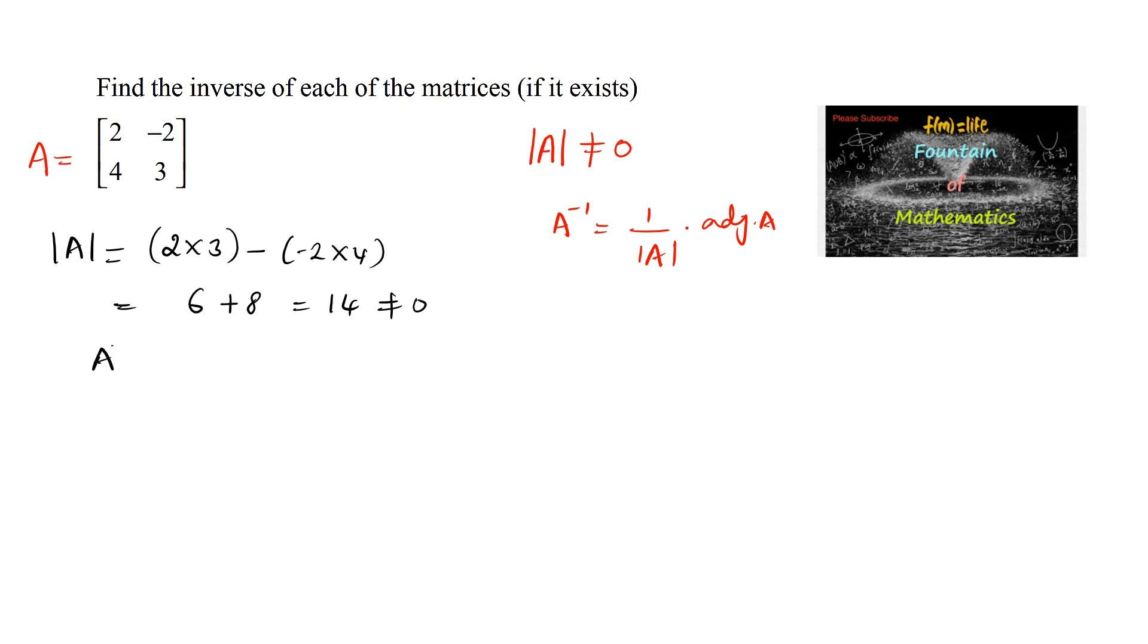Hence we can say that A inverse exists. A inverse equals 1 upon det(A) into adjoint of A.